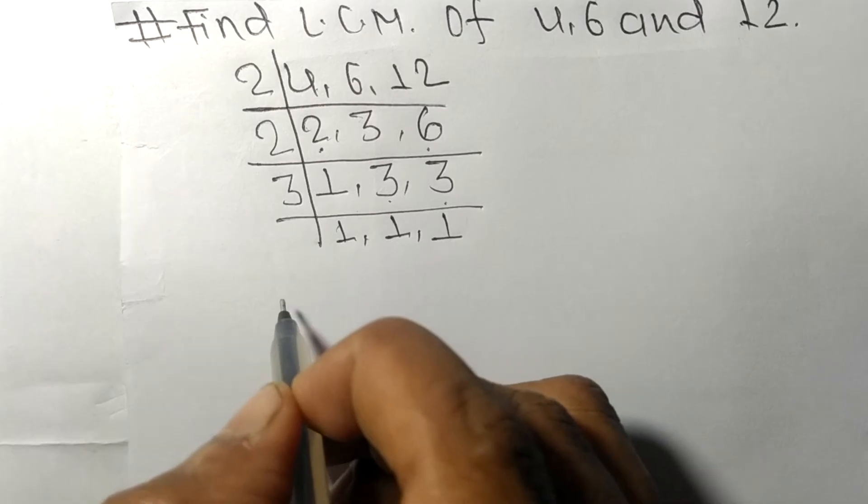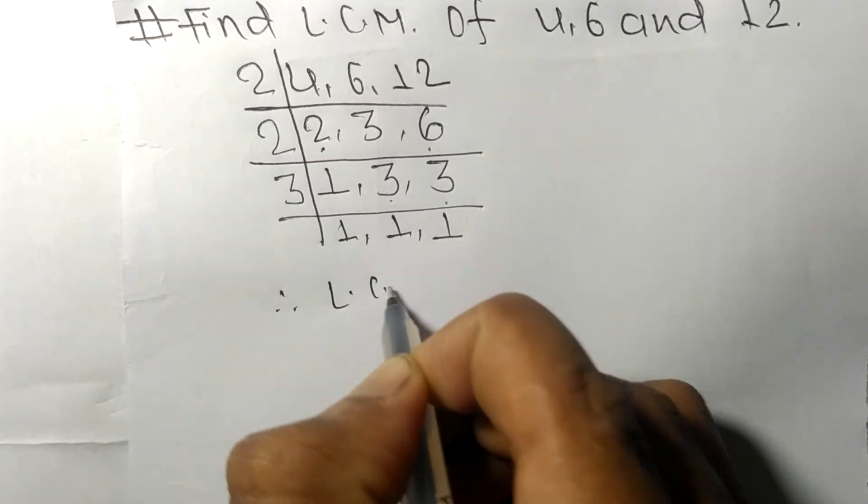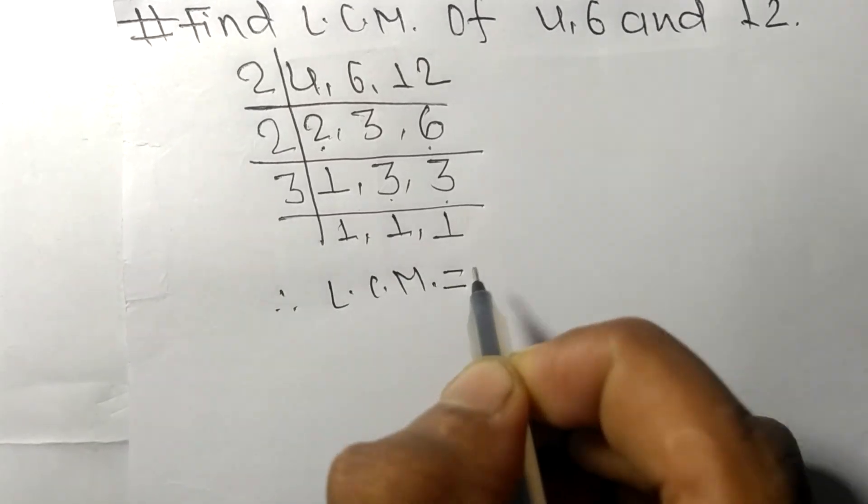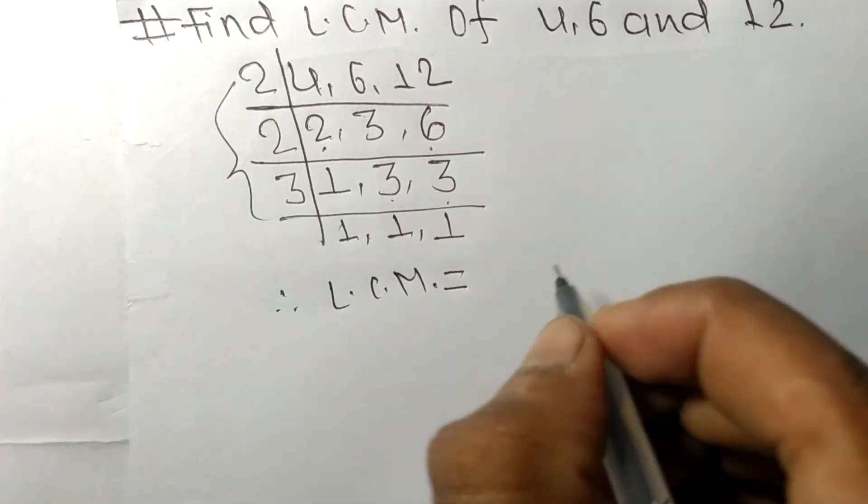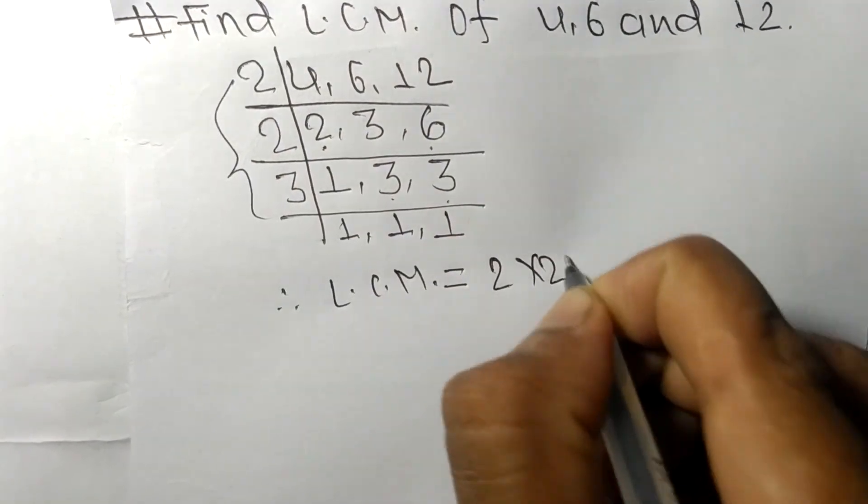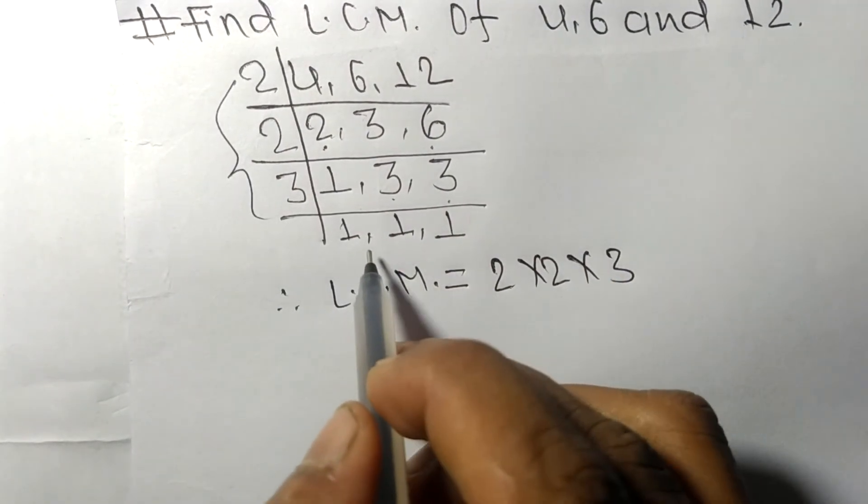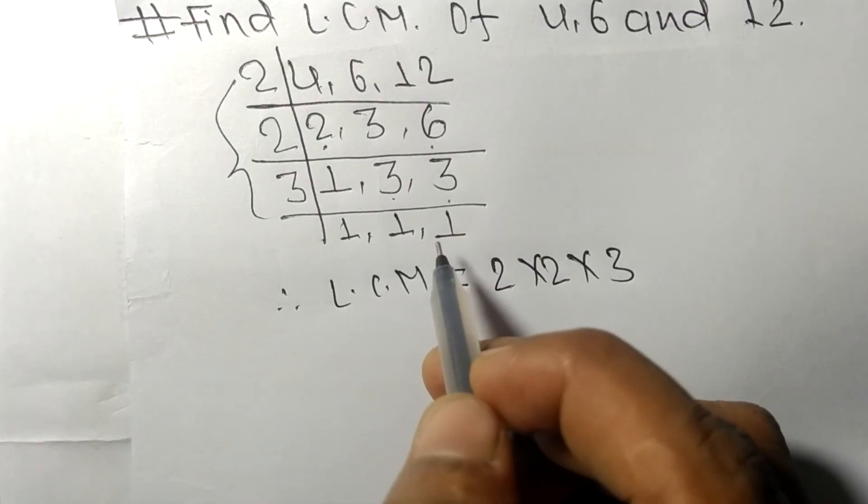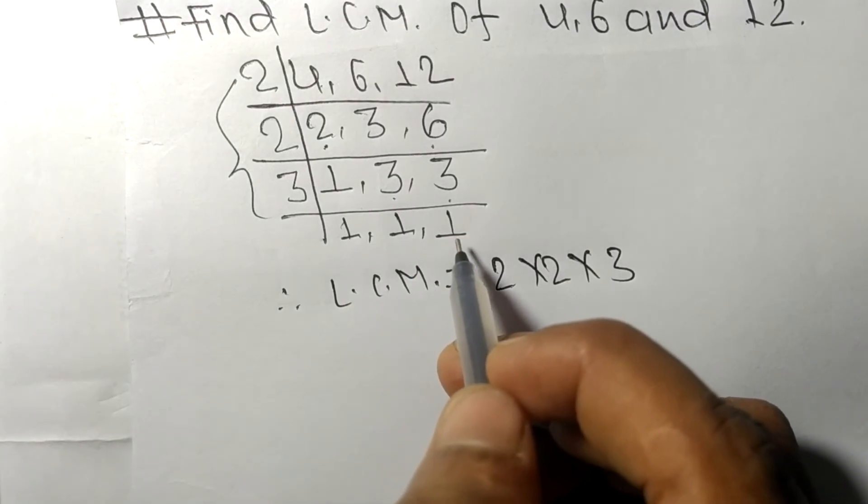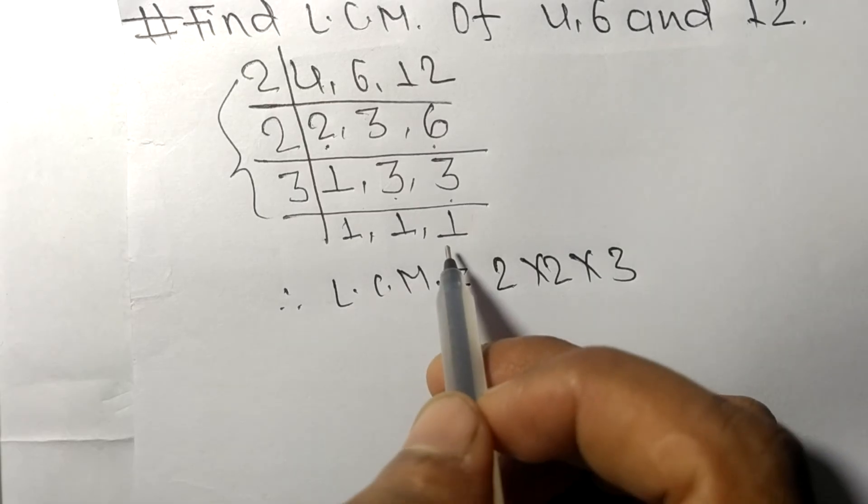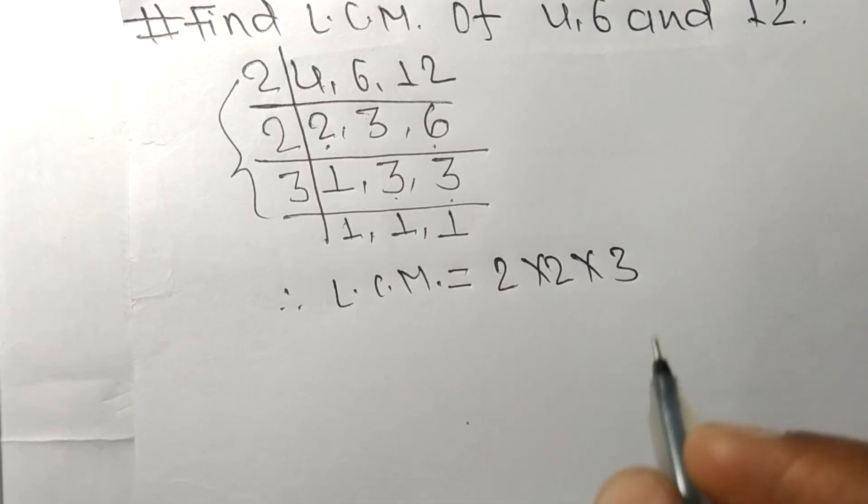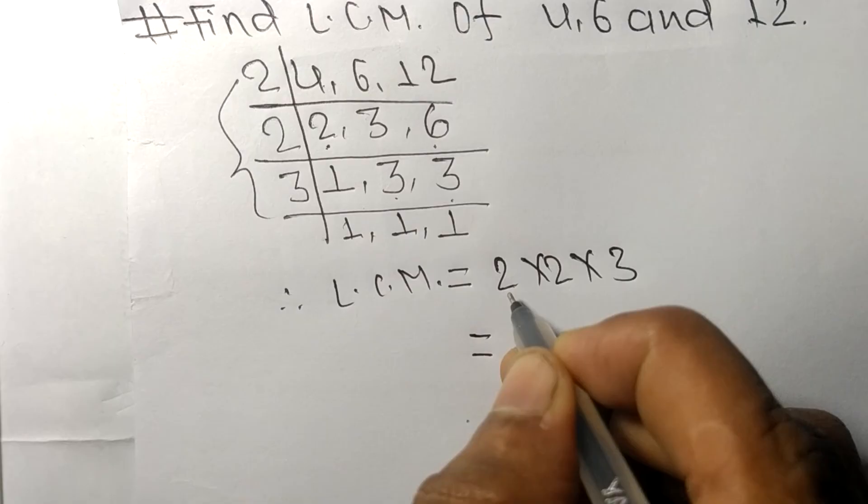So the LCM equals, from this side, 2 times 2 times 3. Here we only have 1, so we can neglect it because multiplying these numbers by 1 gives the same result.